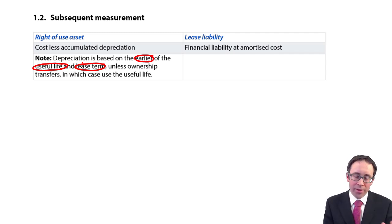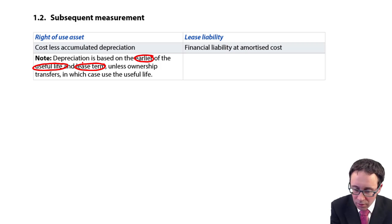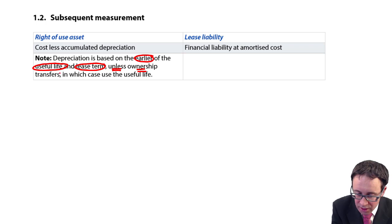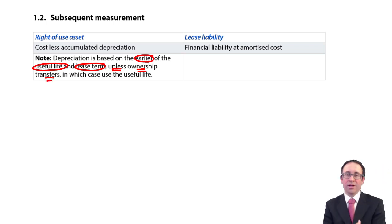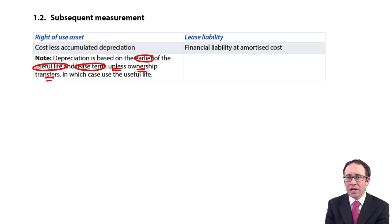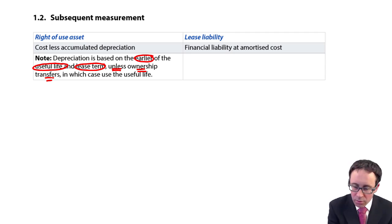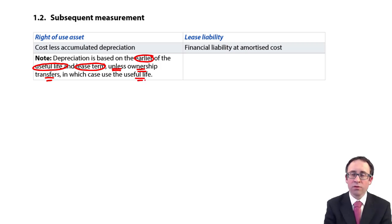As always, there's a little bit to try and trip you up — there's an 'unless.' Unless the ownership transfers: if the ownership transfers to us at the end of the lease, then we're always going to be using it for its useful life, and therefore we would depreciate it over its useful life.